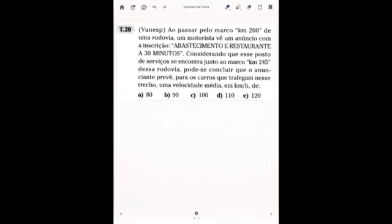Ao passar pelo marco quilométrico, quilômetro 200 e uma rodovia, um motorista vê um anúncio com a inscrição Abastecimento e Restaurante a 30 minutos. Considerando que esse posto de serviço se encontra junto ao marco quilômetro 245 dessa rodovia, pode-se concluir que o anunciante prevê para os carros que trafegam nesse trecho uma velocidade média em quilômetros por hora.